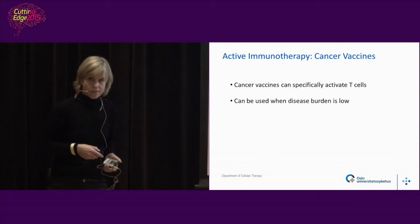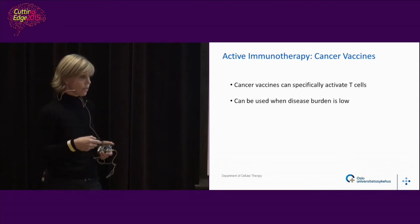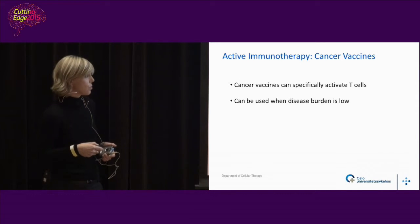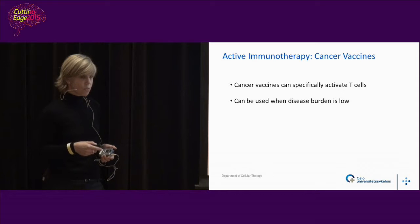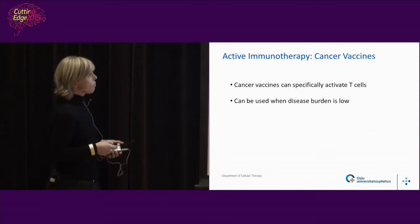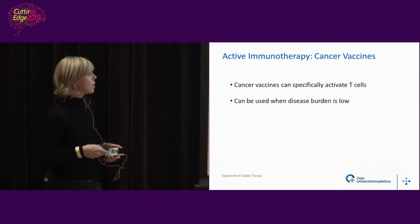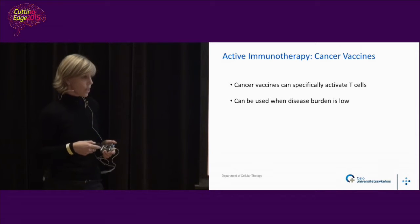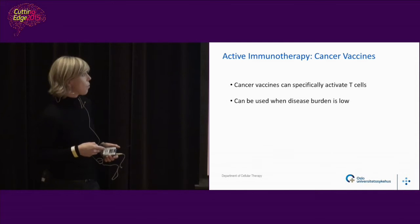Cancer vaccines are active immunotherapy because we're trying to activate the patient's own cells in the body to attack the cancer. They work better when used early in disease or after chemotherapy has managed to remove most of the disease, because they need time to work. You need time to train the immune system and for the T cells to attack the cancer — that normally takes a few months.